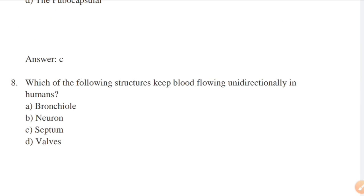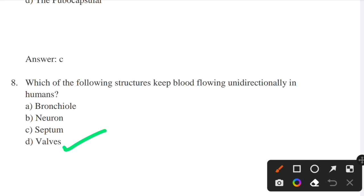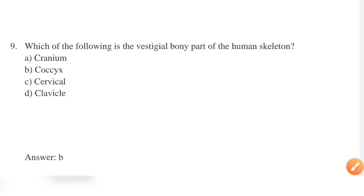Which of the following structures keeps blood flowing unidirectionally in humans? Options: bronchial, neuron, septum, valves. Answer: option D — valves. Valves normally allow blood flow in only one direction.